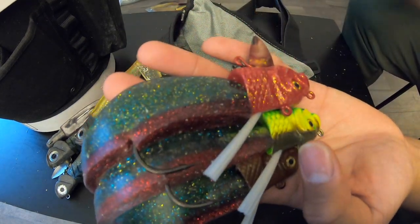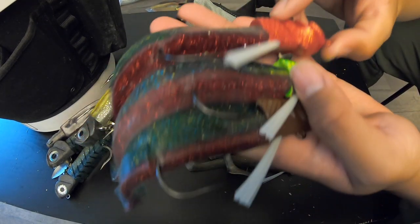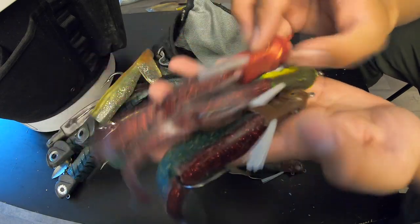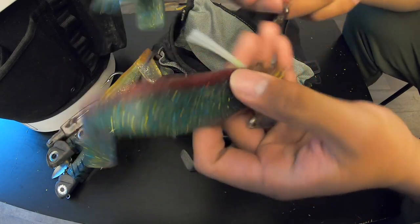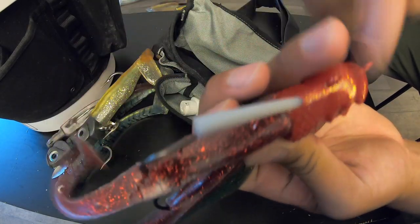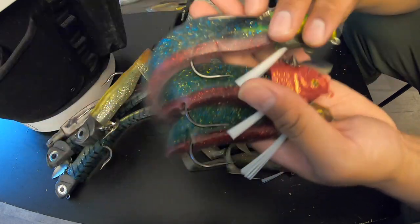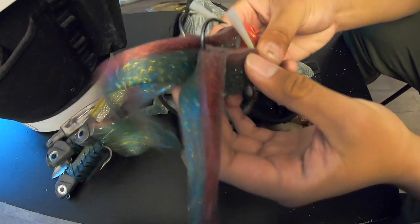First color is Christmas tree. These are Big Hammer 6.5 inch swimbaits. The 6.5 inch are a little bit taller, which is why I like them over the 7 inch. The 7 inch are kind of thin profile and they break easier. So the 6.5 Christmas tree is a really great color especially in sunny conditions. I pair them up with 3.5, 4.5, and a 6 ounce head just depending on the depth and the current. Again, you want to fish the lightest weight you can get away with.